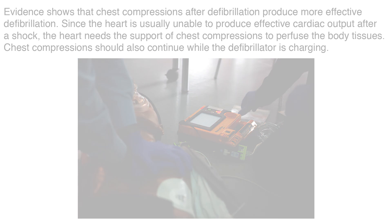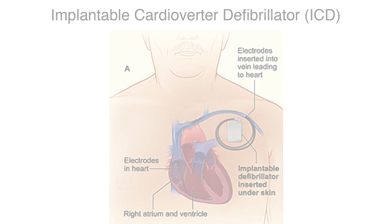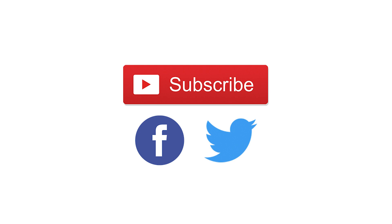The treatment of choice for those that survive V-fib is an implantable cardioverter defibrillator, or ICD. You can refer to our pacemaker video for more details on the ICD. Thank you for watching this video tutorial on EKG interpretation of ventricular arrhythmias.